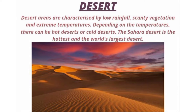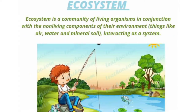Ecosystem. Ecosystem is a community of living organisms in conjunction with the non-living components of their environment — things like air, water and mineral soil — interacting as a system.